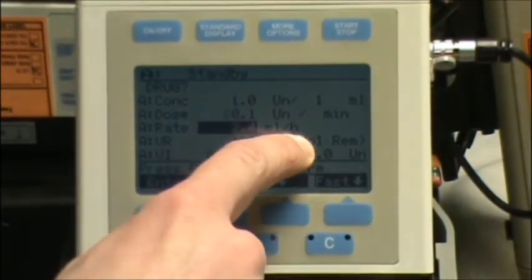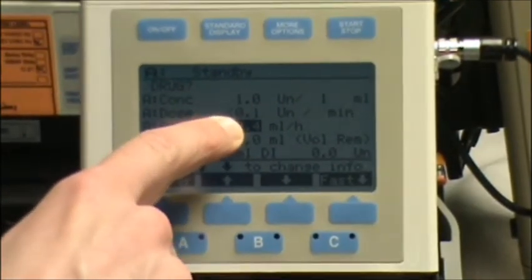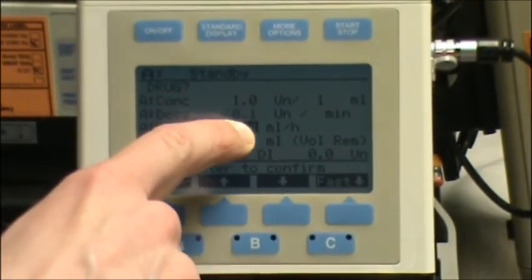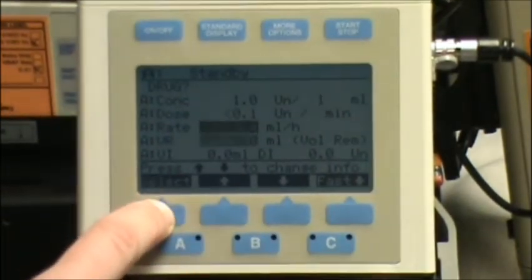2.4 mLs an hour comes out to a dose of less than, so the less than symbol shows up here now, 0.1 units a minute. Press enter.